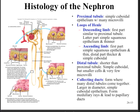The collecting ducts form where the distal convoluted tubules come together. They're larger in diameter and lined with simple cuboidal epithelium, running from the medullary rays and leading into the papillary ducts, which dump into the minor calyces, then the major calyces, then the renal pelvis, and next the ureter.